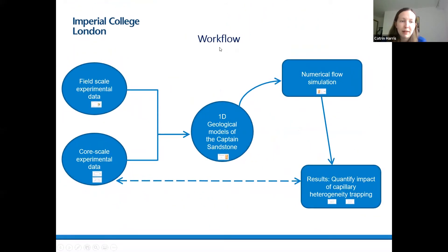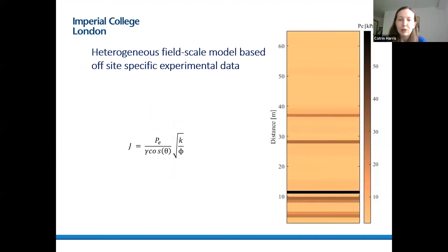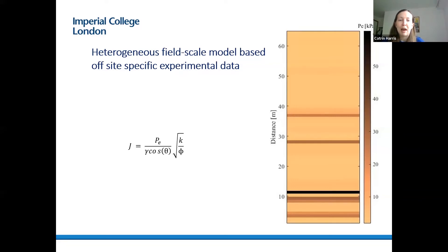I combined core-scale and field-scale experimental data to make 1D geological models of the Captain Sandstone. Leverett J-scaling is used to scale the capillary entry pressure with depth over the full 65-metre interval for CO2 and brine parameters. Based on the experimental data, vertically heterogeneous 1D models have been developed, where porosity is assumed constant over one-metre intervals, representative of bedding planes with heterogeneity length of one metre. This variation in capillary entry pressure with depth will result in capillary heterogeneity trapping.